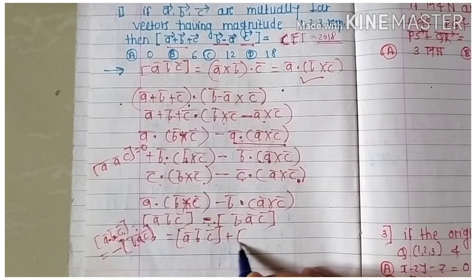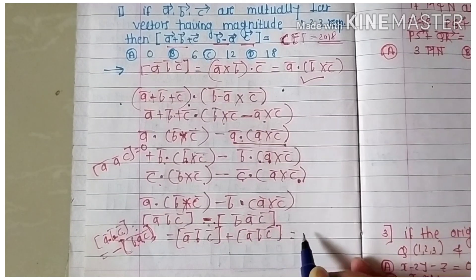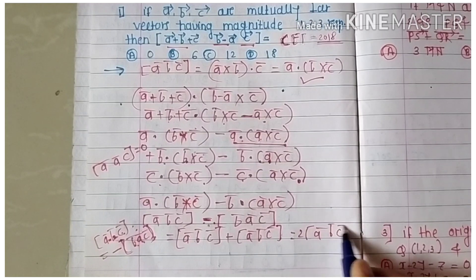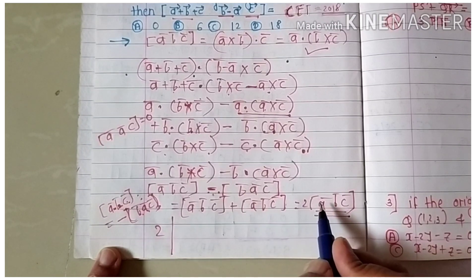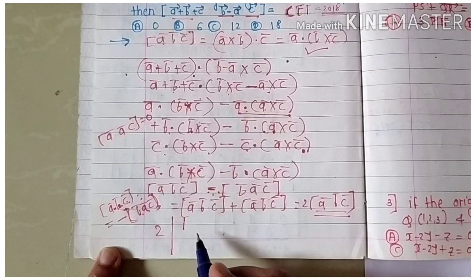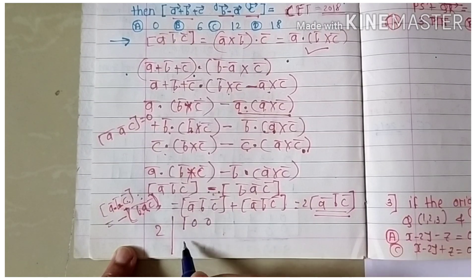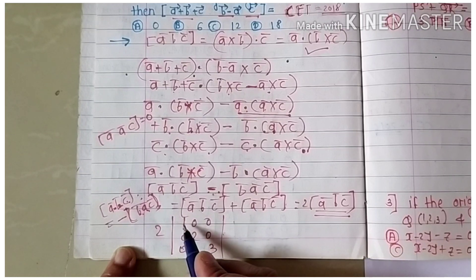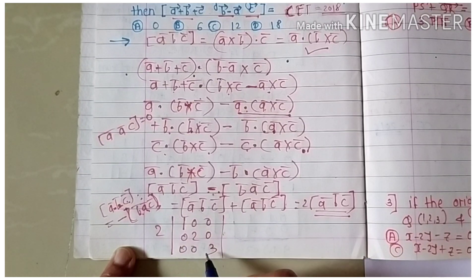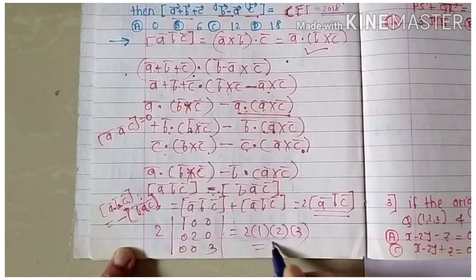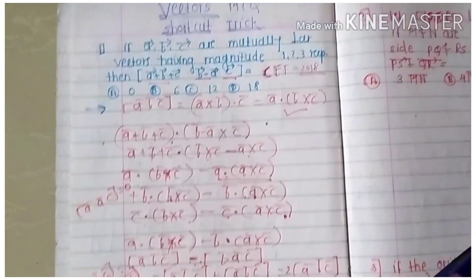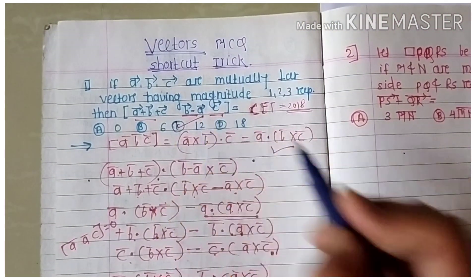We get [ā, b̄, c̄] + [ā, b̄, c̄] = 2[ā, b̄, c̄]. Now we compute the scalar triple product using the determinant. The three mutually perpendicular vectors with magnitudes 1, 2, 3 give a diagonal matrix with entries 1, 2, 3, so the determinant = 1 × 2 × 3 = 6. Therefore 2 × 6 = 12. The answer is 12, so option C is correct.